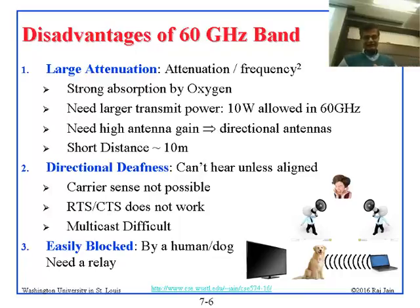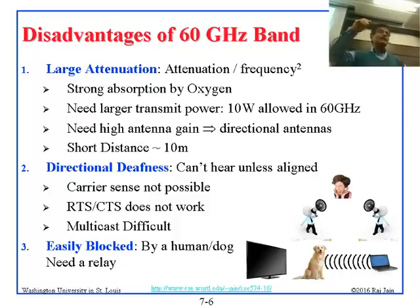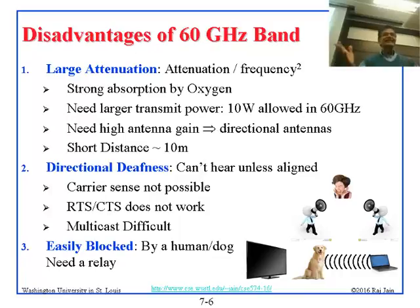There is also something called deafness: if I'm talking to you but my antenna is facing the wrong direction, you cannot hear me. Direction is very important. Carrier sense is not possible — you cannot detect if somebody else is transmitting because they might be transmitting in a different direction. So RTS/CTS will not work anymore. Multicast is also very difficult — if you want to talk to everybody you have to do it 15 times. And the signal is easily blocked if something comes and sits in front of you.